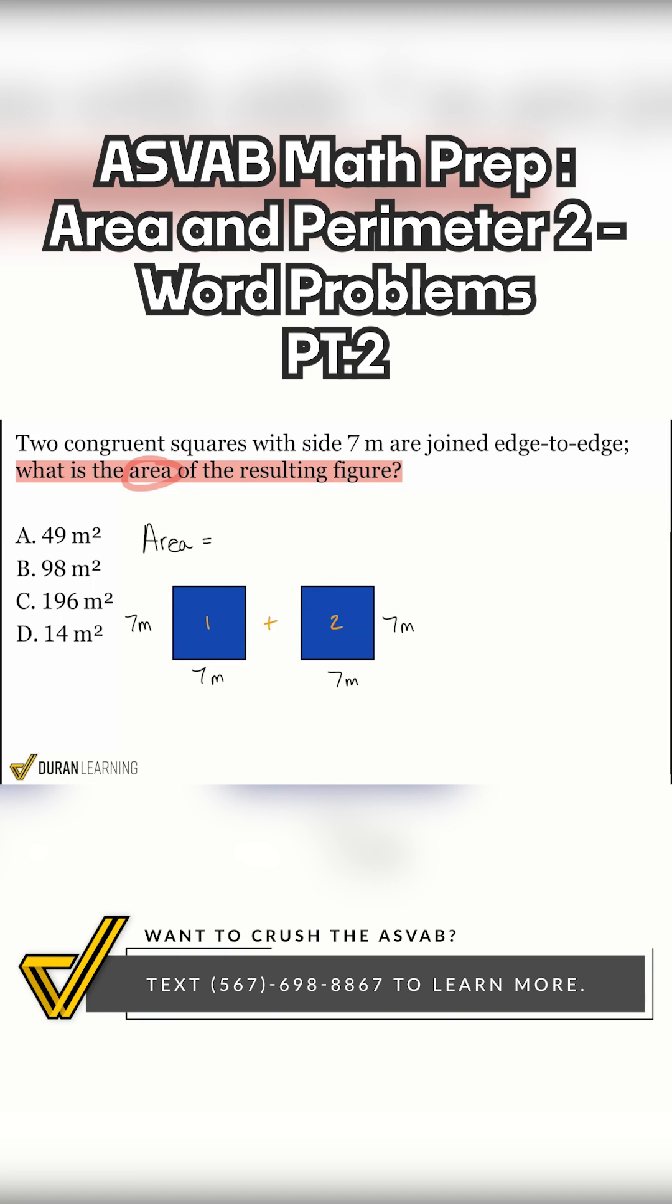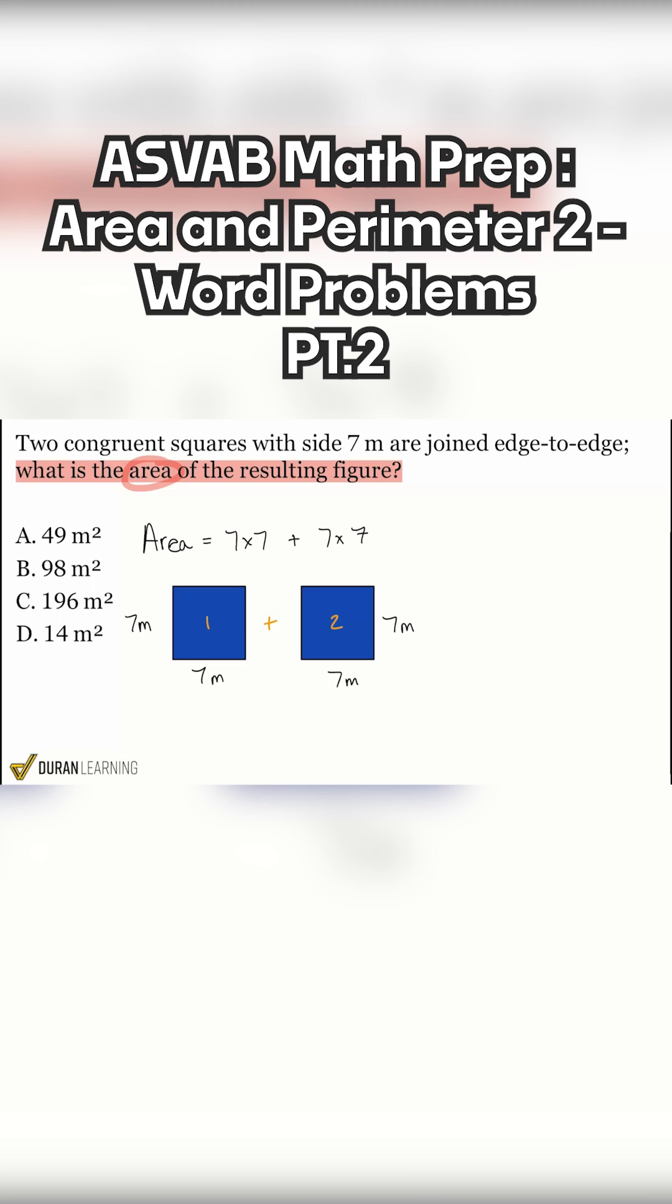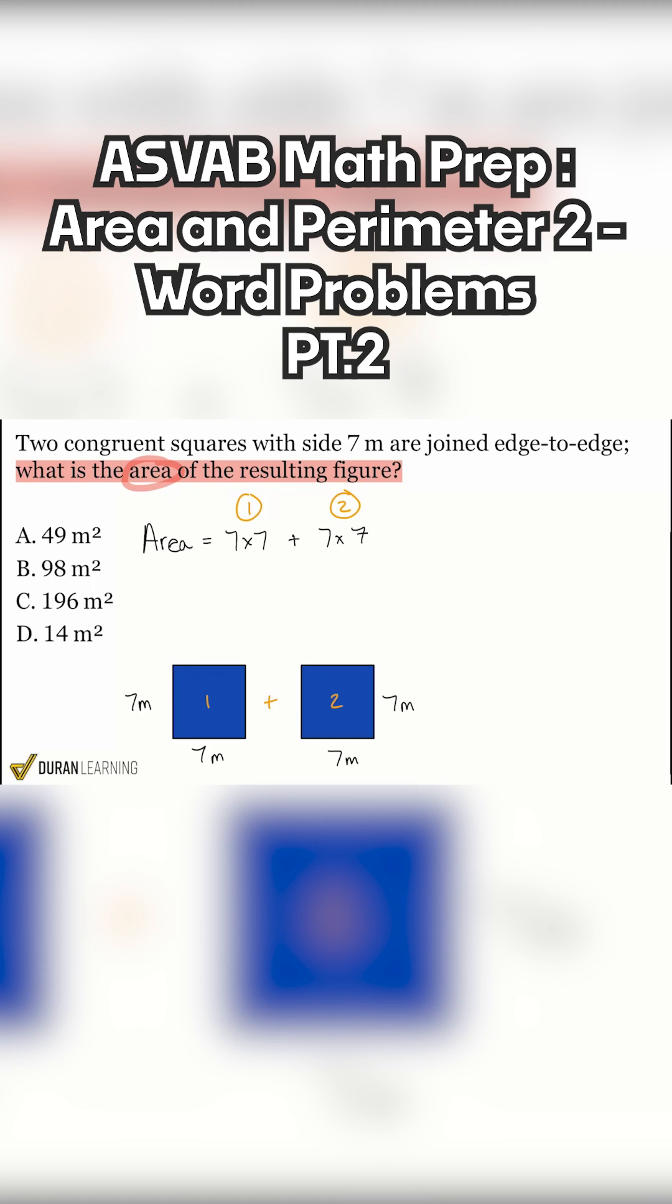well, we can say that the area of the first one is a square. So it's seven times seven. And the area of the second one is just seven times seven. We can think about it just like that. And so if we bring this down a notch, let's go ahead and write this out.